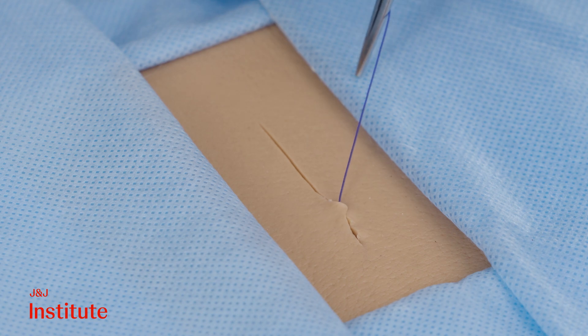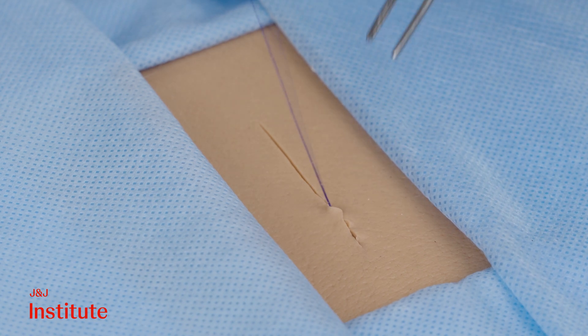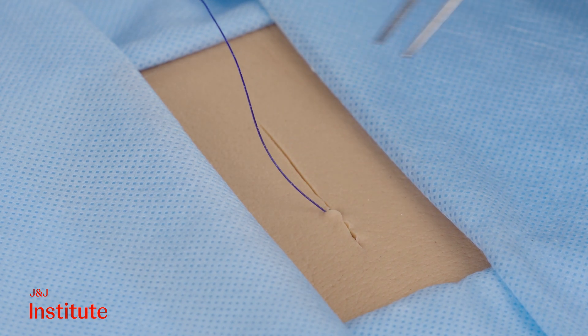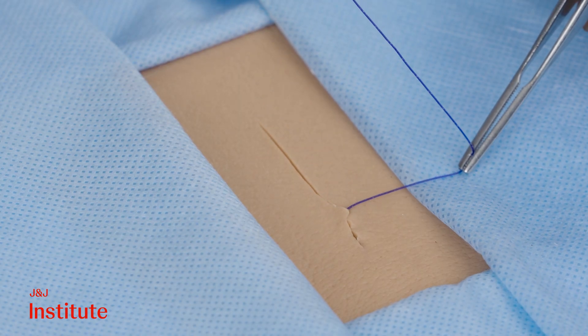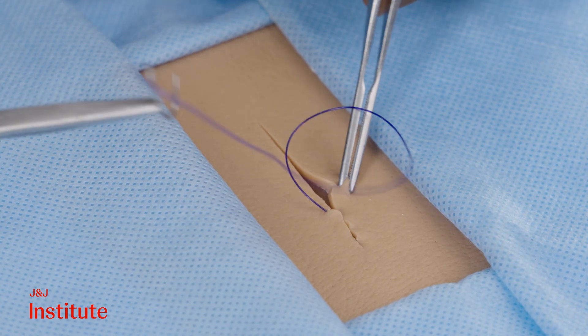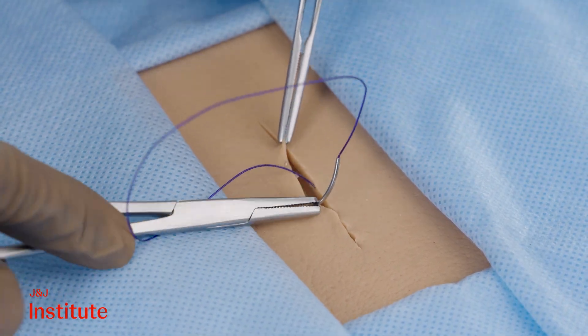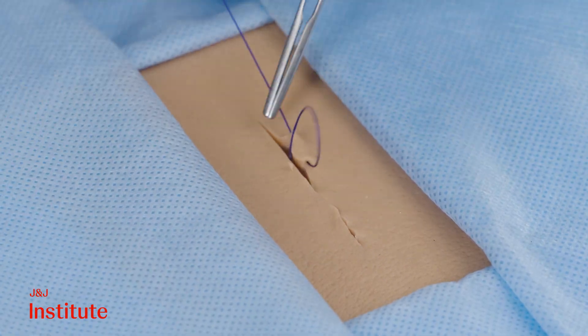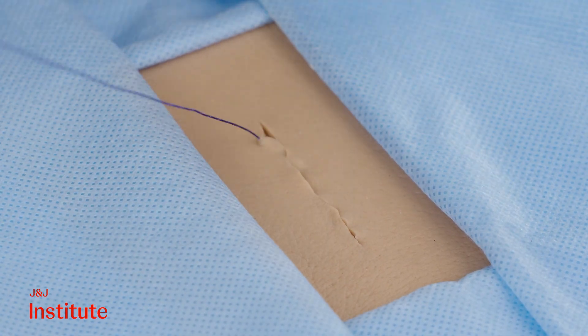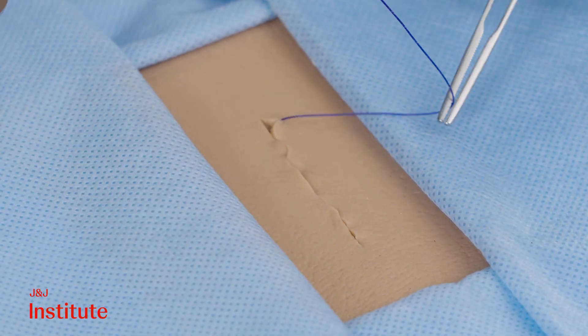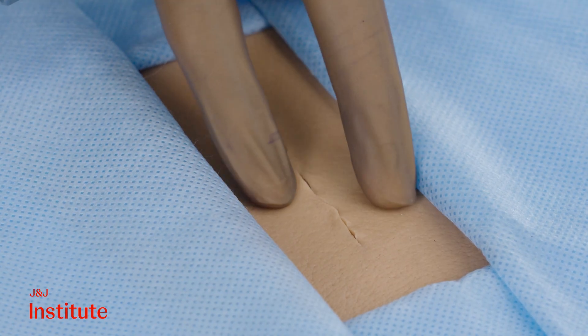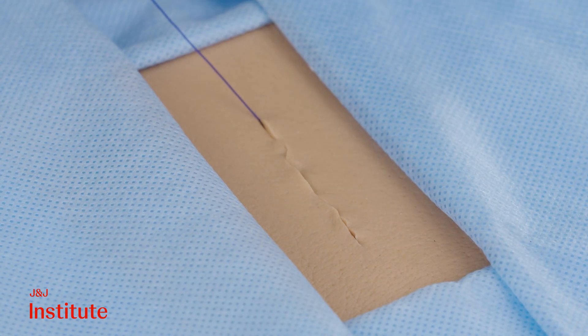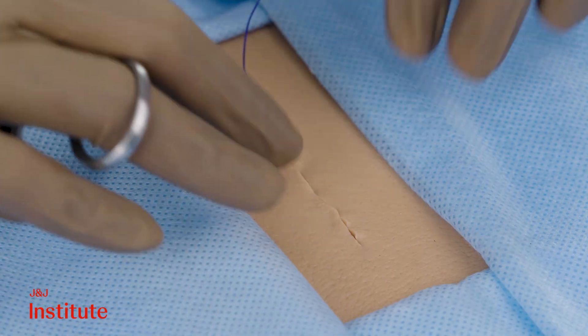Subsequent subcuticular bites are placed parallel to the averted skin edges, ensuring opposite points of entry and exit. Barbed sutures effectively maintain skin edge apposition and prevent suture slippage, minimizing any laxity.